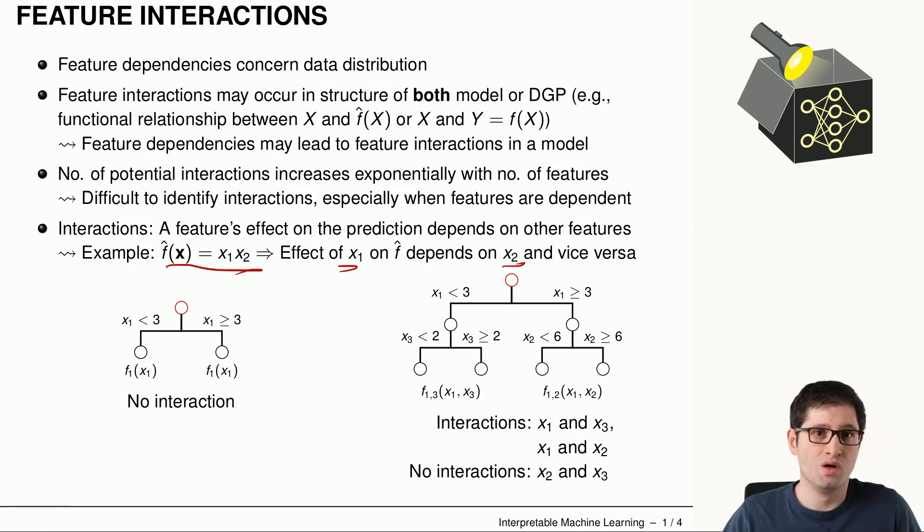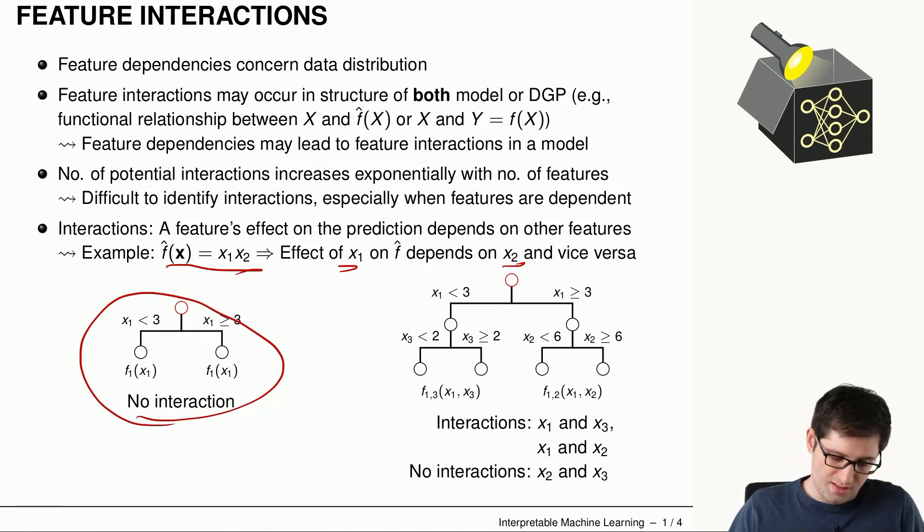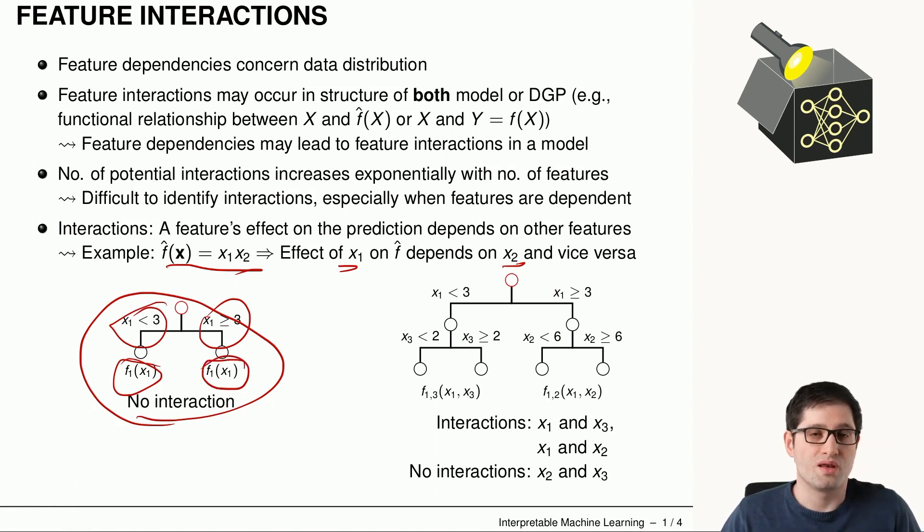And we can look below at two decision trees on the left-hand side of the decision tree without interactions. Meaning that here, since the decision tree splits with respect to x1, on the left-hand side we only have a function that depends on feature x1. Also on the right-hand side, we have only a function that depends only on x1.